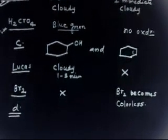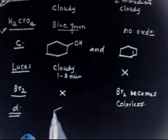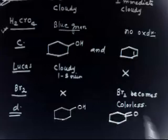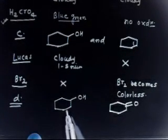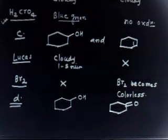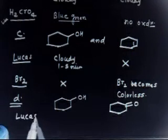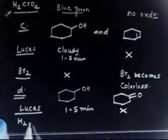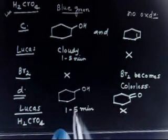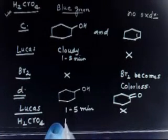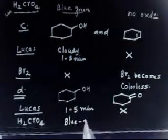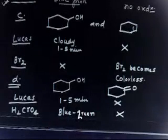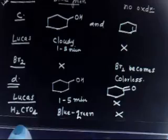Part D: cyclohexanol versus cyclohexanone. Cyclohexanol is a secondary alcohol — it can get oxidized — while cyclohexanone is already oxidized and cannot be oxidized further. You can use the Lucas test: cyclohexanol gives a cloudy precipitate in one to five minutes; cyclohexanone gives no reaction. You can also use H₂CrO₄: cyclohexanol (secondary alcohol) turns the solution blue-green, while cyclohexanone, being a ketone, will not react.